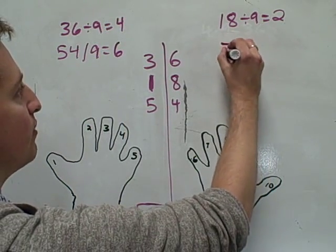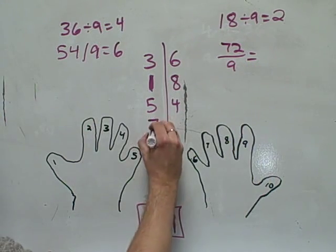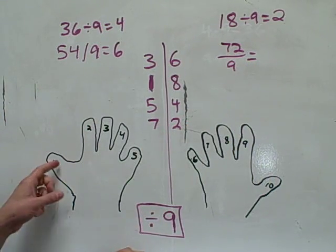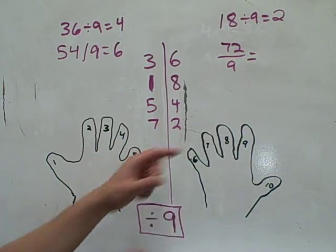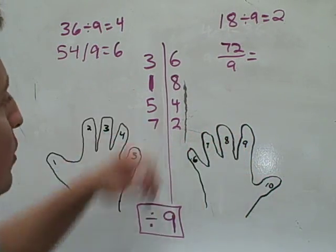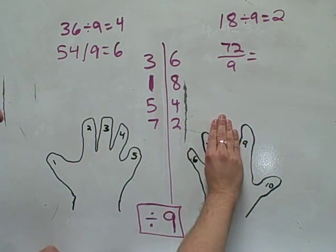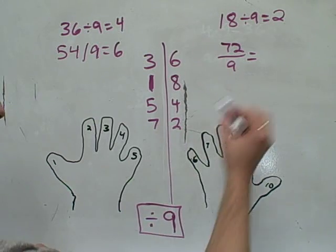And finally, let's try 72 divided by 9. We need to make 72 with our fingers. So 1, 2, 3, 4, 5, 6, 7. That means I'm going to put my eighth finger down. To show 7 on this side. And 2 on the other. So the answer is 8. Because I put my eighth finger down.